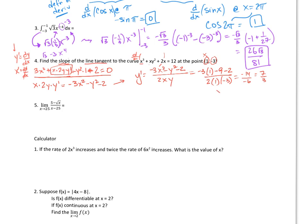So 7 thirds is the slope of the tangent line. If the problem asked for the equation of the tangent line, you would plug in the point: y plus 3 equals 7 thirds times x minus 1.